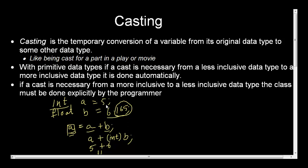It's basically a temporary conversion of a variable from its original data type to some other data type. In this case, it was a temporary conversion of variable b from its original data type, float to int. Okay, so now you guys got a basic handle on what casting is all about.